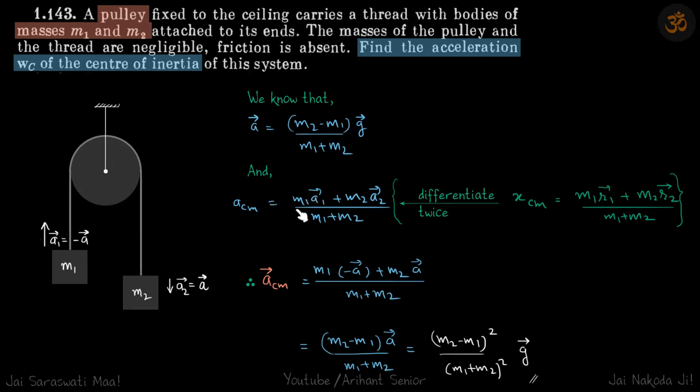Now, acceleration of center of mass is M1 A1 vector plus M2 A2 vector by M1 plus M2. If you are wondering how this equation came, this is a standard equation for the location, the position of center of mass.